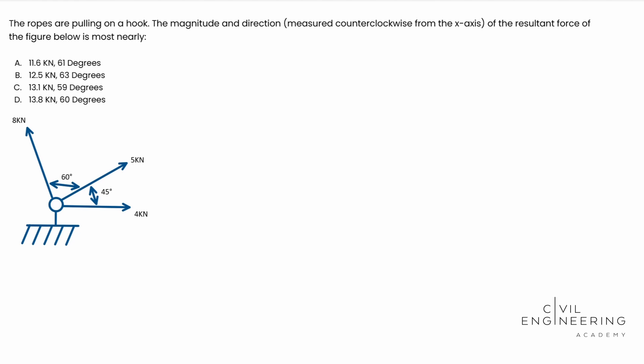We have a problem here that talks about ropes being pulled on a hook and it wants us to find the magnitude and direction. Basically, that means the resultant force and the angle that it acts on. It gives us four options and a diagram, so we're going to go ahead and solve it.